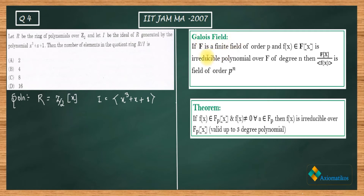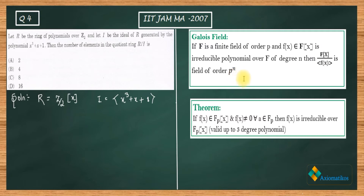The first note is the Galois field result. If F is a finite field of order p — similar to Z₂ which is also a field — and f(x) is irreducible over F of degree n, then the quotient ring F[x]/⟨f(x)⟩ is a field of order pⁿ. This quotient ring is no longer just a ring; it becomes a field known as the Galois field, with order determined by pⁿ.